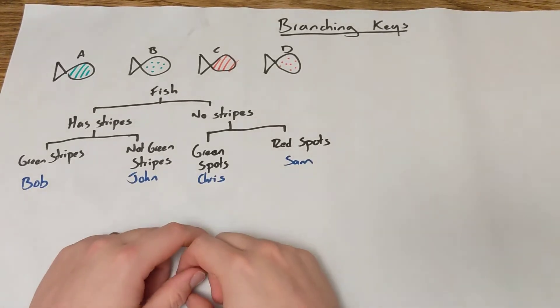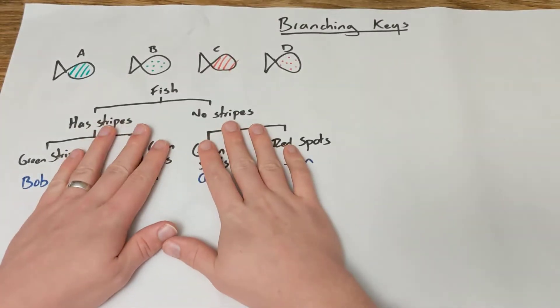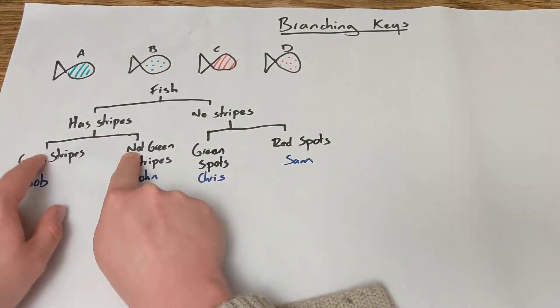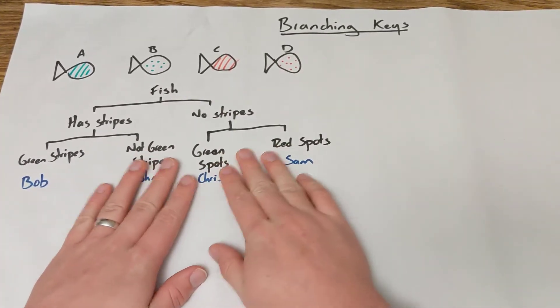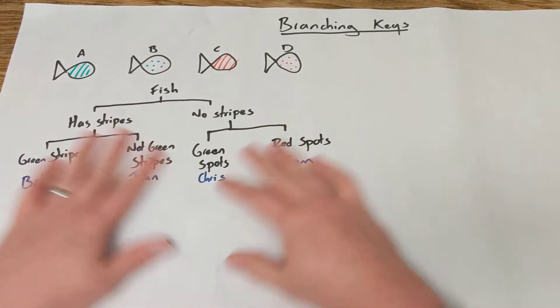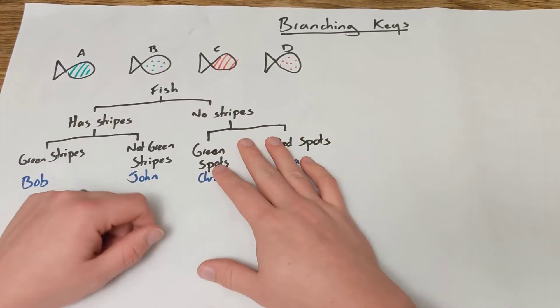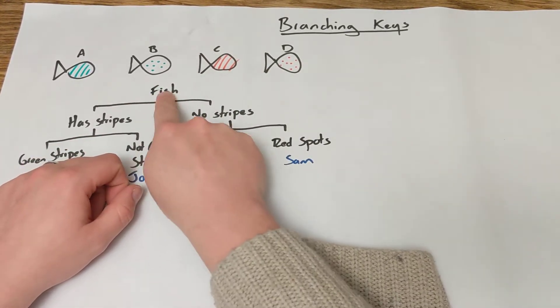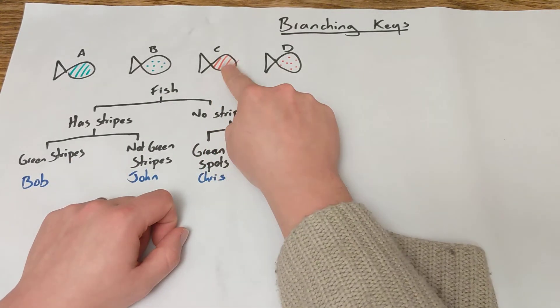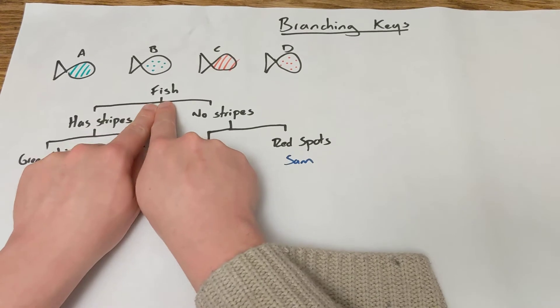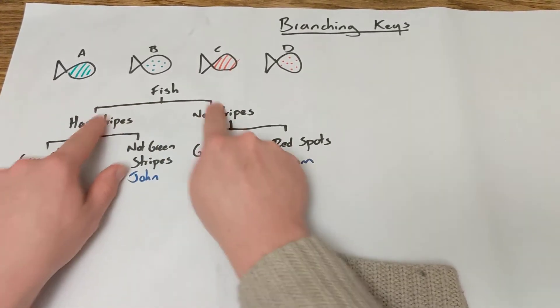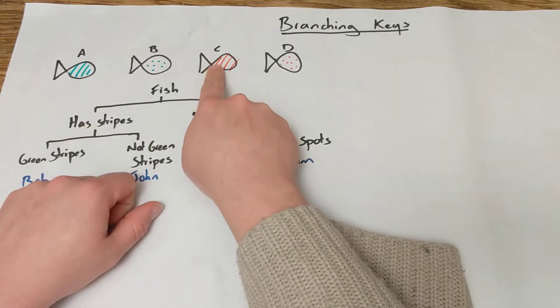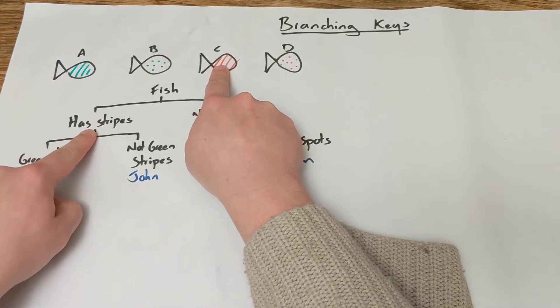And I've made a branching key now. So before we look at this in detail, you can see there's different branches that come off and that's where it gets the name from. This is obviously a fairly silly example and we'll look at some more serious ones, but I just want to do this quick basic one so you can actually see how we use them. So at the top, we've got that these are all fish. And so I want to find out what the name of fish C is. My first question, I've got two options. I can either go to the has stripes branch or the no stripes branch. So fish C, well that has stripes, so I come here.